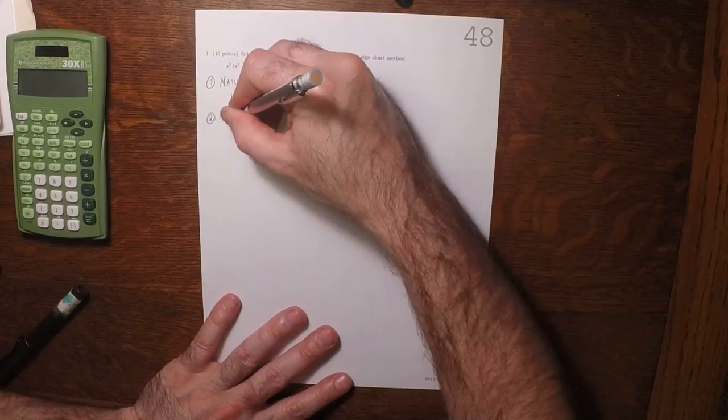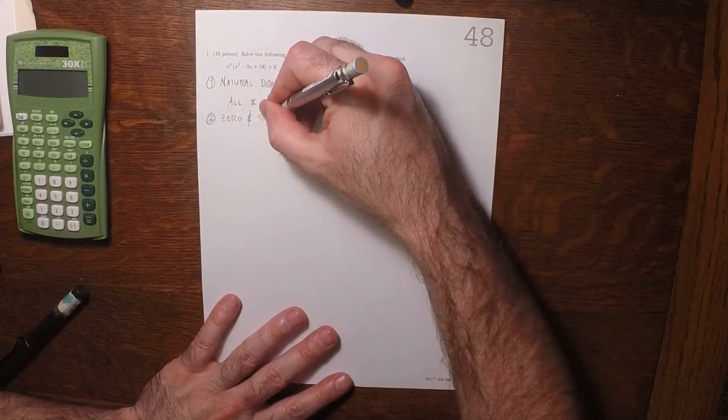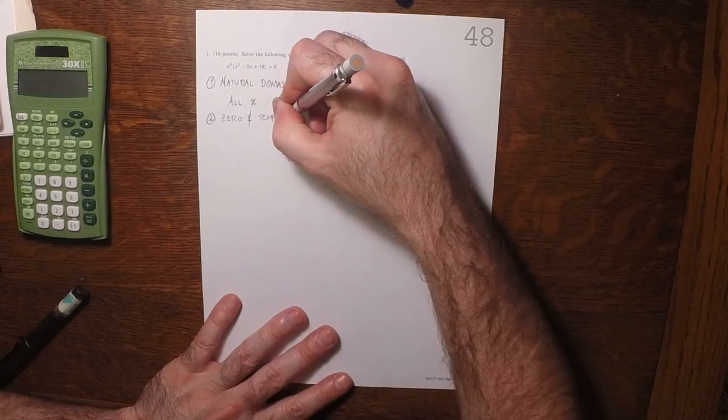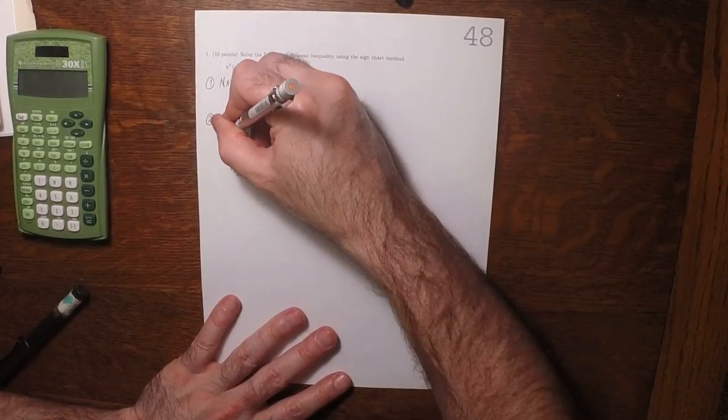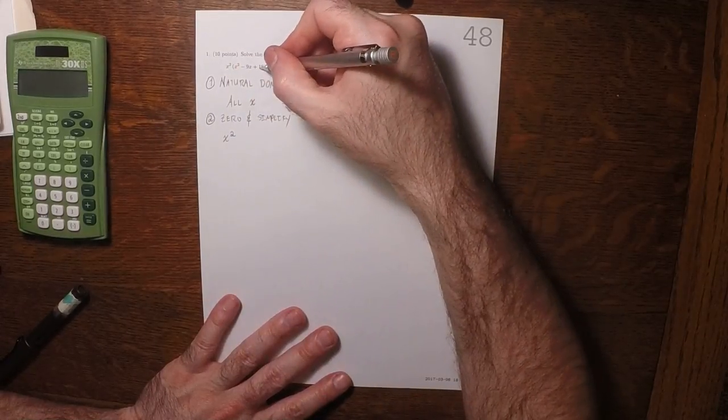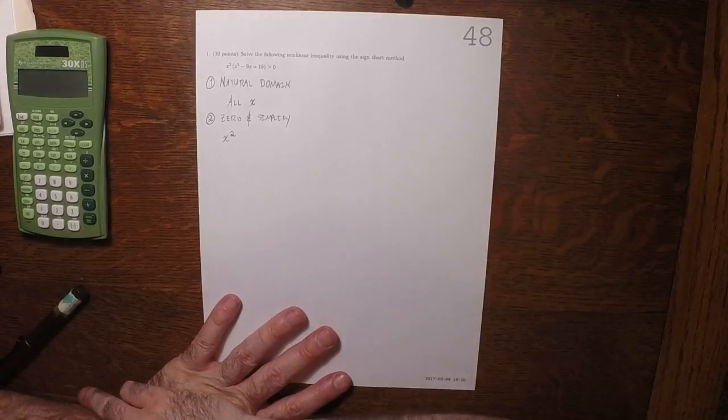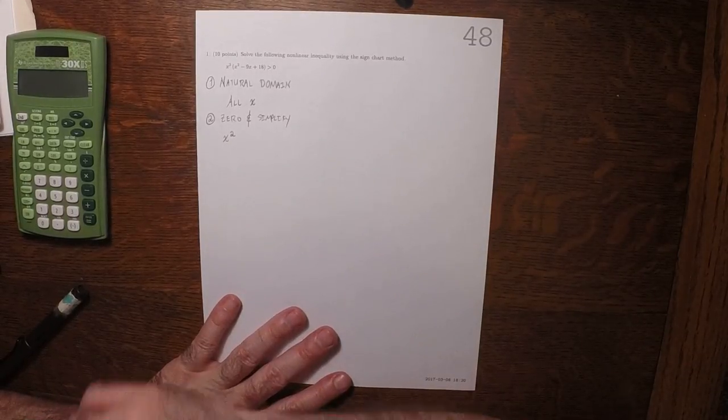2, we want to 0 and simplify. So x squared, that's factored out. That's as good as it gets. And can we factor this? So can we think of two numbers whose product is positive 18 and whose sum is negative 9?